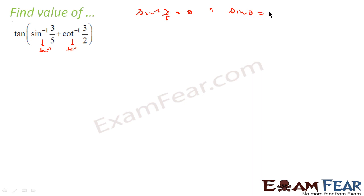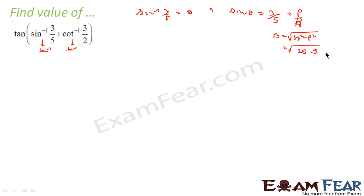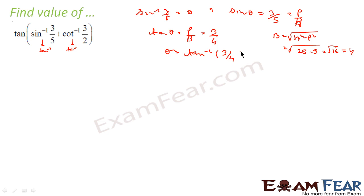Let's convert sin inverse(3/5) first. Let sin inverse(3/5) = θ, so sin θ = 3/5, that is perpendicular over hypotenuse. The base is root of (h² - p²) = root of (25 - 9) = root of 16 = 4. So tan θ = 3/4, which means sin inverse(3/5) equals tan inverse(3/4).